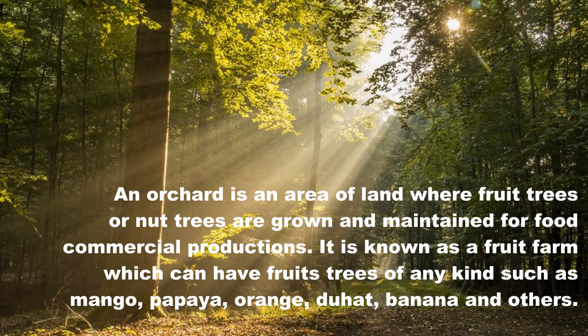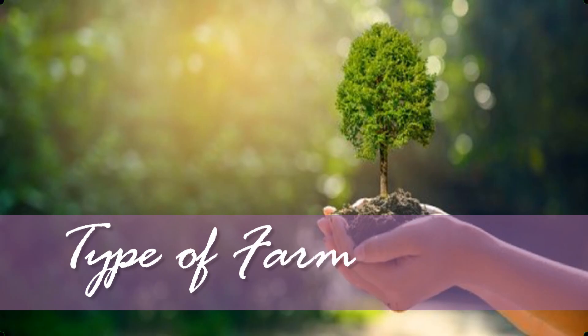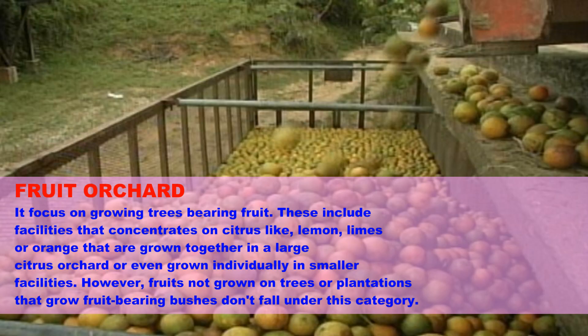An orchard is also known as a fruit farm, which can have fruit trees of any kind such as mango, papaya, orange, duhat, and other types of fruit. There are different types of fruit orchards.